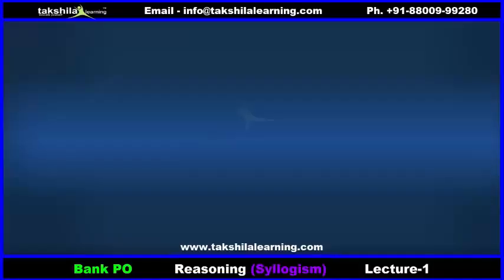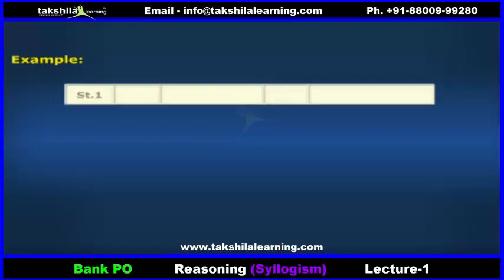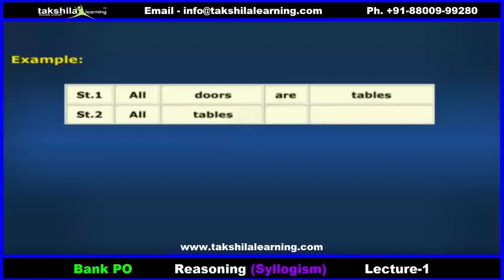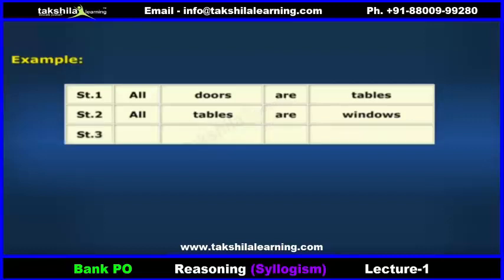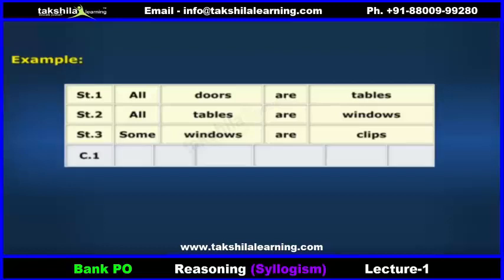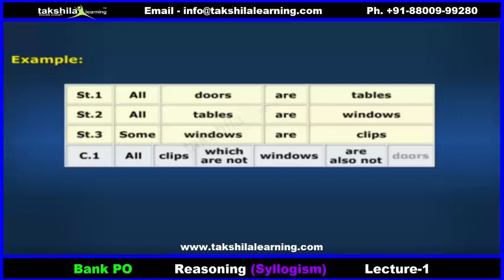Vidya, let's see some more examples. Here it is. Statements are: All doors are tables. All tables are windows. Some windows are clips. And answer if this conclusion follows or not: All clips which are not windows are also not doors.